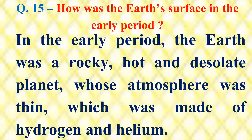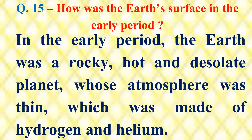Question number 15: How was the Earth's surface in the early period? In the early period, the Earth was a rocky, hot and desolate planet whose atmosphere was thin, which was made up of hydrogen and helium.